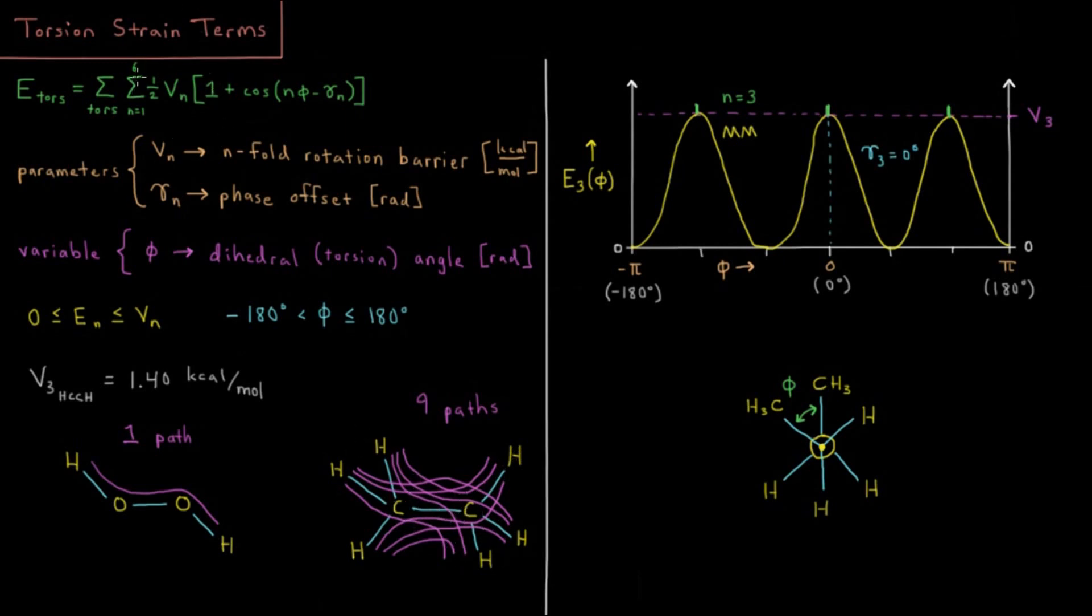That's going to be a sum from N equals one to six. We have the one fold all the way up to the six fold terms of one half times a parameter called the rotation barrier, then the quantity one plus cosine N phi minus gamma. So we have a couple different parameters here.